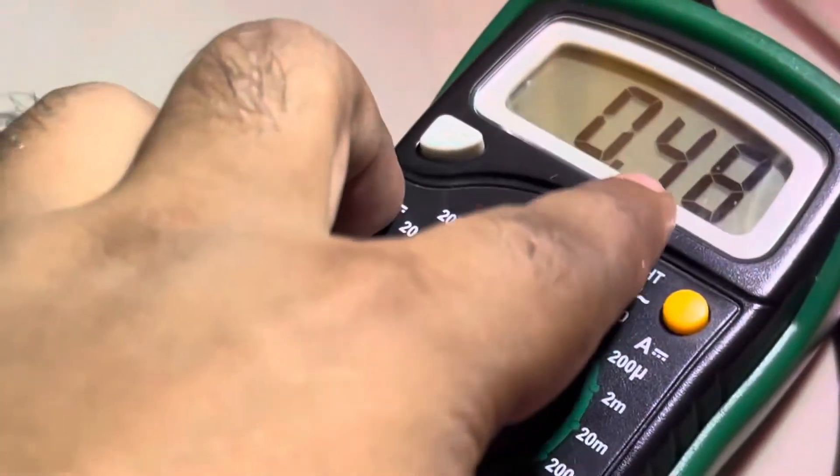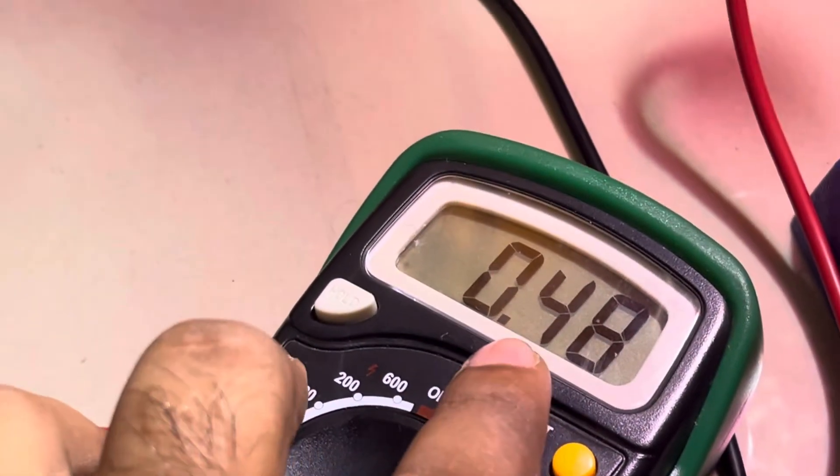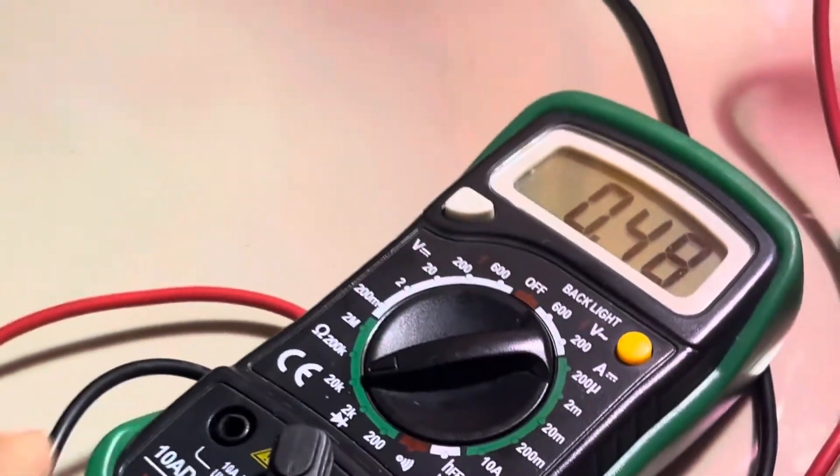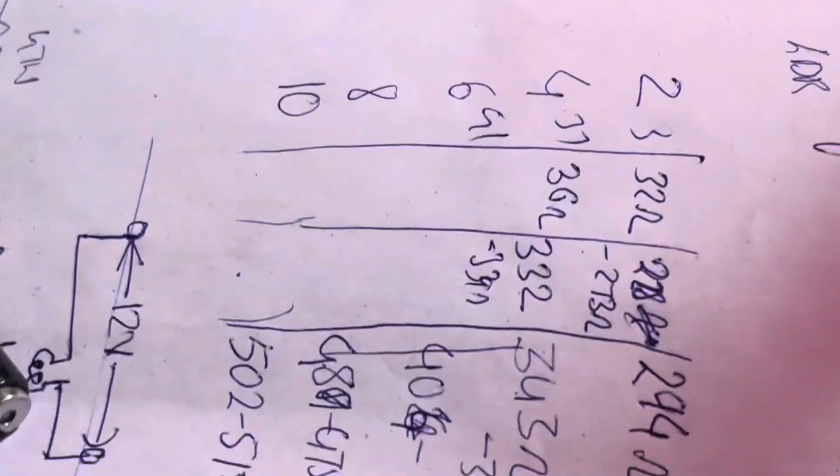The resistance further increases to 0.48 kilo ohm. So gradually, as the distance increases, the resistance also increases. This simple activity you can perform and write in tabular form in your notebook. You can write the aim of the activity as given by CBSE, and note down that when we increase the distance, the resistance is increasing.